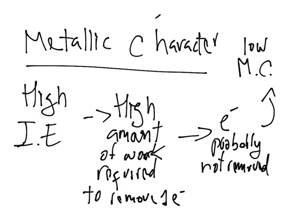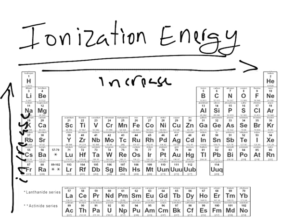You'll have a low metallic character. A low metallic character, as I said before, is a non-metal. A non-metal will have a high ionization energy. Going back to the periodic table, we see that it's going to the right.